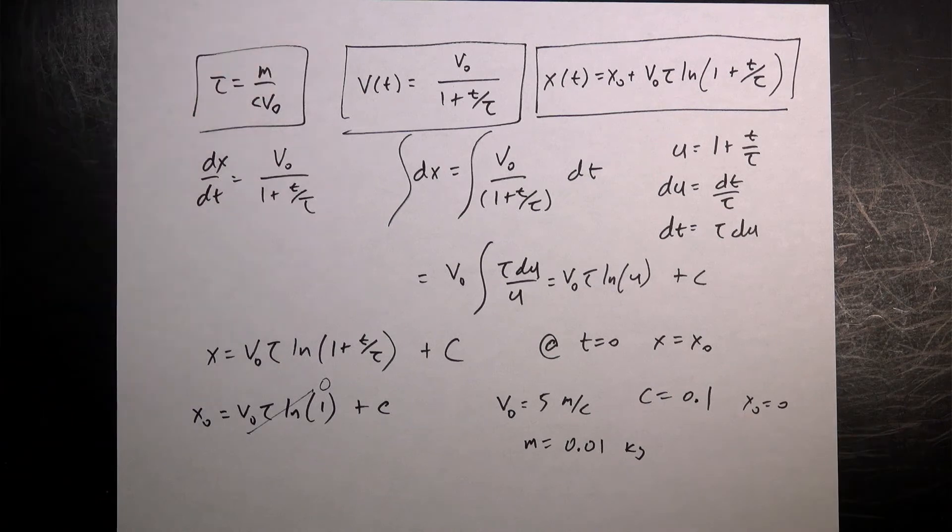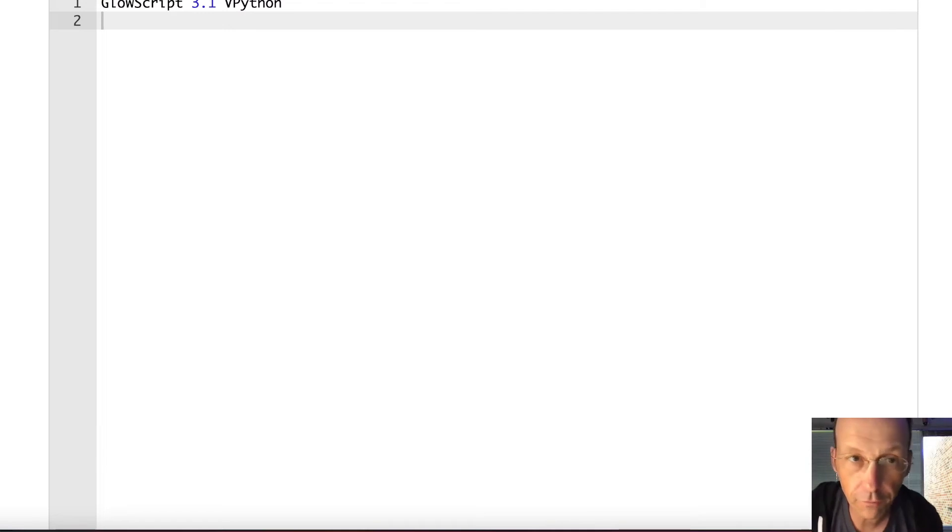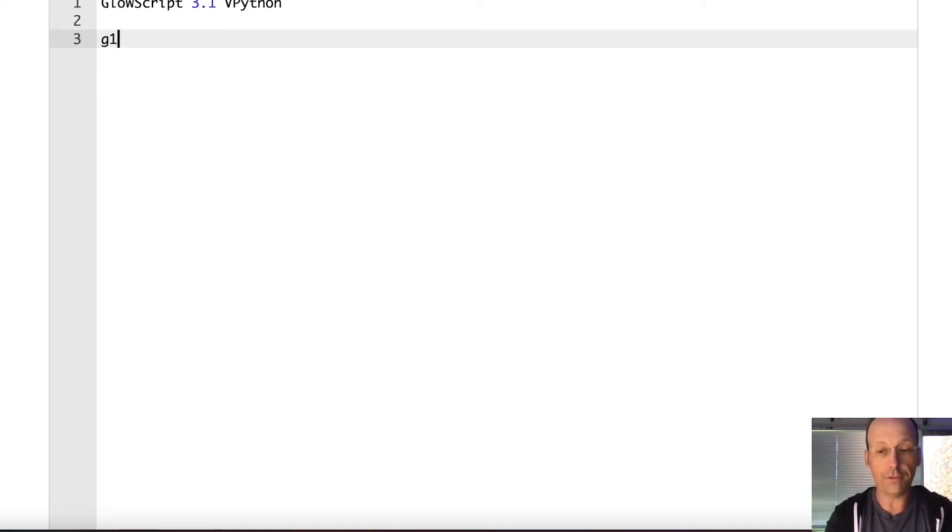So let's switch over to Python and graph this. And if I need to change these numbers, I will, because I can do that because I'm in control. So if you're not familiar with graphing in GlowScript, this is web VPython. It's Python in a web page. It's super great, super nice. I like it a lot. And let's make a nice graph. So I'm going to make two graphs. I'm going to make a velocity versus time and a position versus time. And they're going to be for the same time.